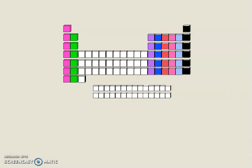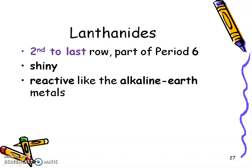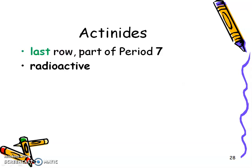So the lanthanides are the second to last row, period six. And the actinides are the very last row, and they're part of period seven.